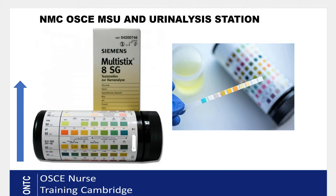Be careful to keep your strip at an angle — not vertical — when reading. As shown on screen, the arrow indicates which direction to read, starting from glucose and ending with leucocytes. If held vertically, urine will run from top to bottom, mixing the reagent chemicals across different pads and producing incorrect results.